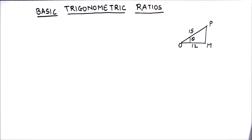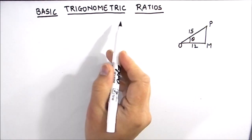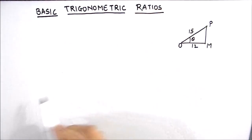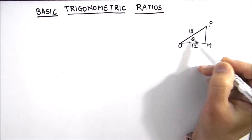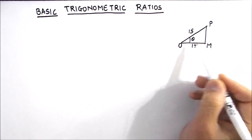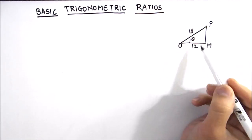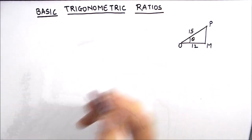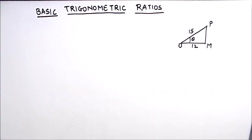Hello everyone. In this video we are going to learn how to find basic trigonometric ratios in a right triangle. Trigonometry, as the name suggests, is the branch of mathematics that deals with the relationship of angles in a triangle and the side lengths. If you have been given a triangle where you know the side lengths, you can easily find the basic trigonometric ratios. Let us find out with the help of this example.